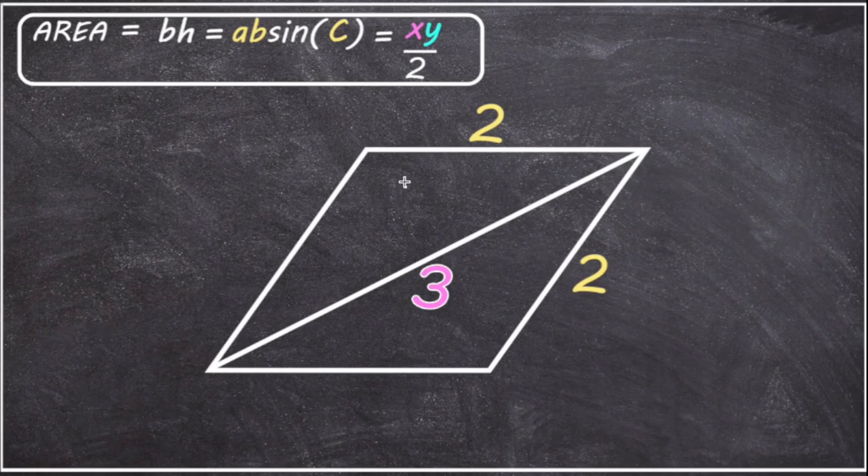I propose that we find the other diagonal, and so then we'd have the value of both diagonals. We can then let one diagonal be X and the other diagonal be Y, and then we can use X times Y over 2 to find the area. Now you're probably wondering how on earth we're going to figure out the value of the second diagonal.